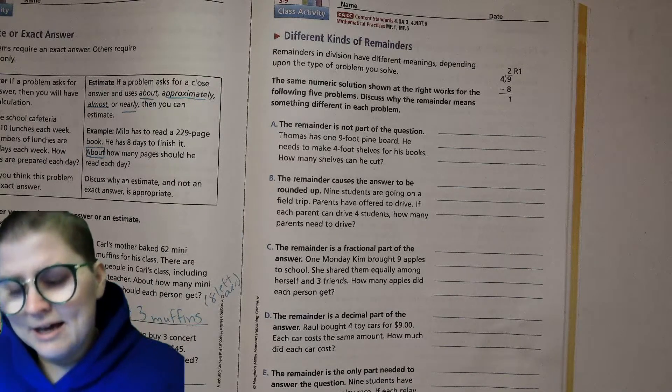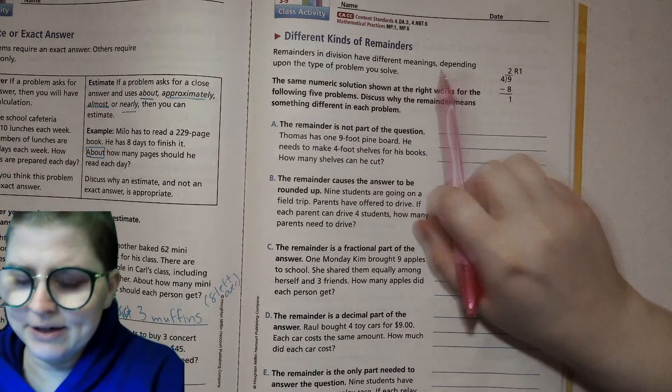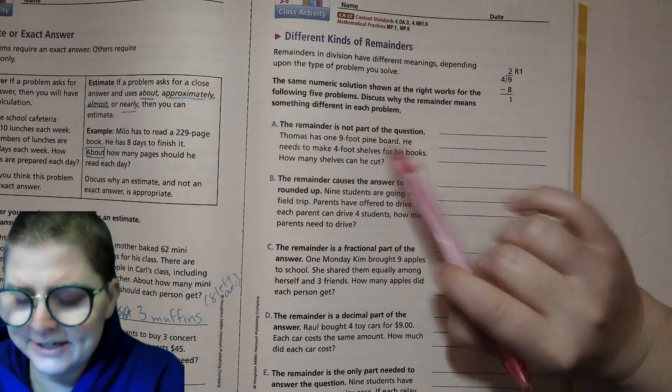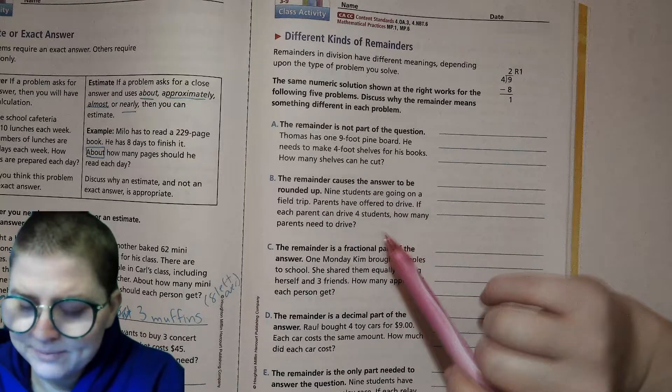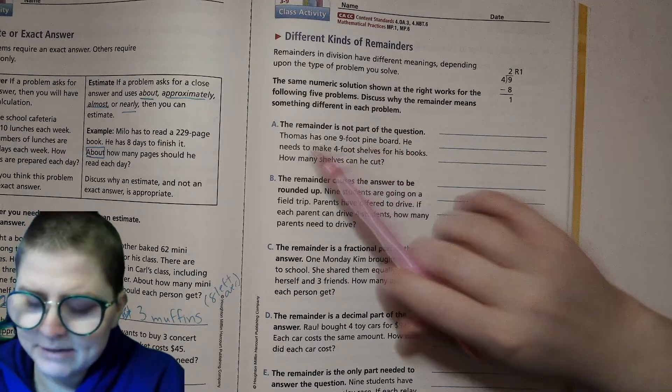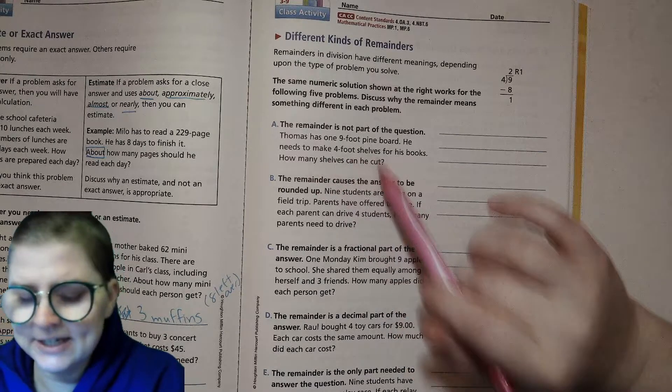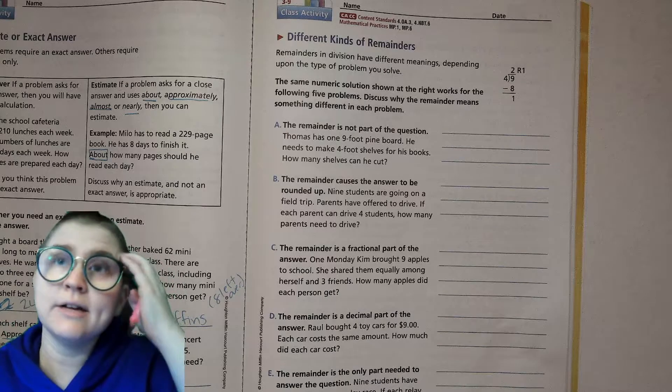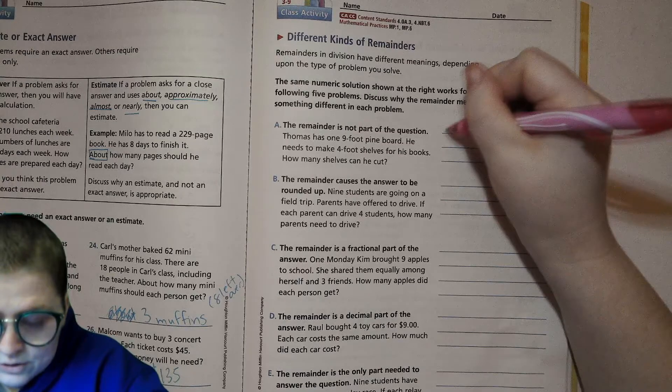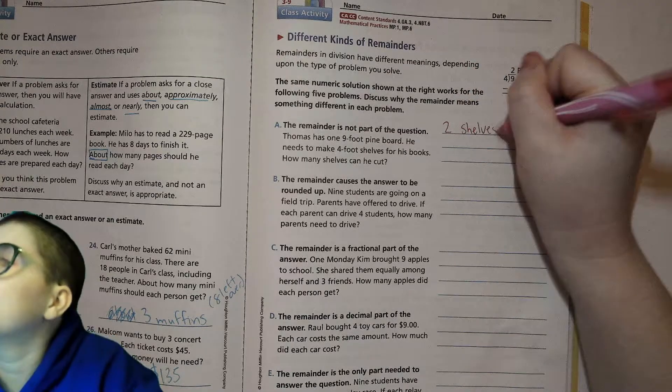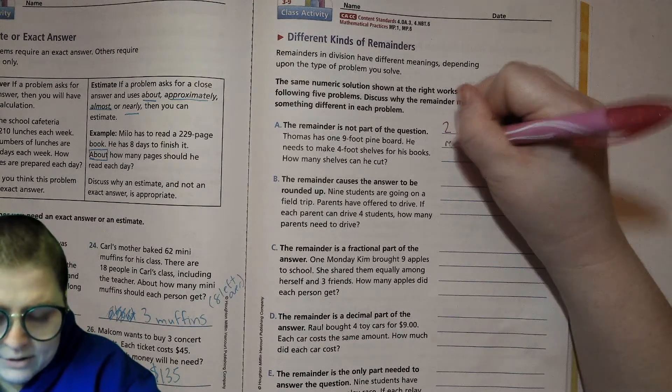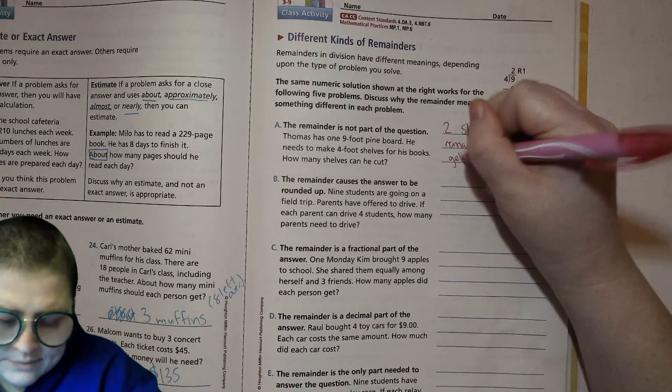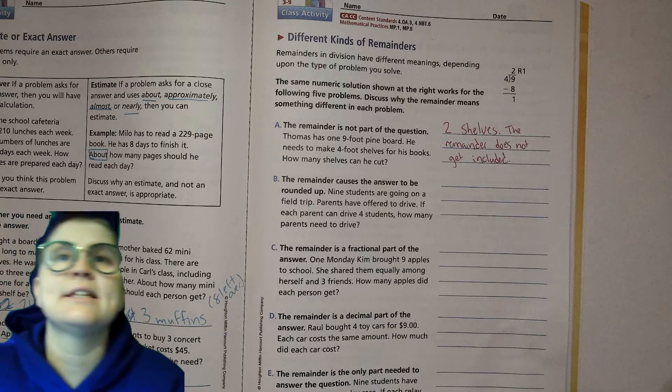Let's get started. Here it says remainders in division have different meanings depending on the type of problem you solve. The same numeric solution shown on the right works for the following five problems. Part A: the remainder is not part of the question. Thomas has one 9-foot pine board, he needs to make four-foot shelves for his books. How many shelves can he cut? Well he can cut two shelves and he'll have one foot left over. So that is gonna go in the scrap wood pile, the remainder does not get included.